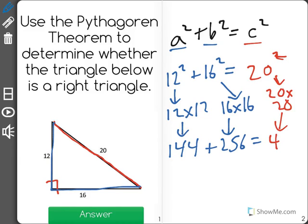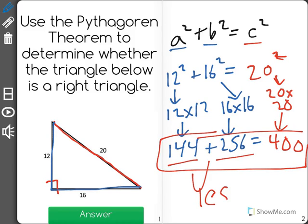So if this is true, then it is a right triangle. And when I add 144 plus 256, I get 400. So yes, this is a right triangle because the Pythagorean theorem works correctly.